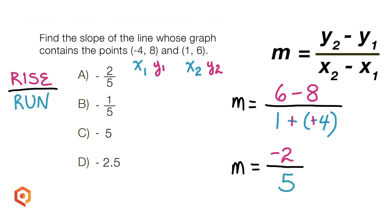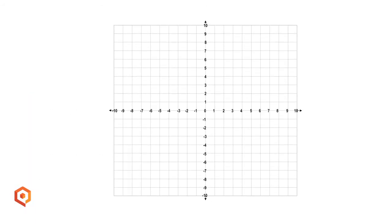If you're a visual learner, it may help to see how this slope relates to a graph. Remember, ordered pairs are of the form x, comma, y.